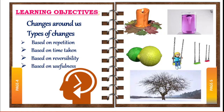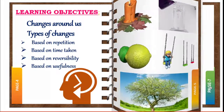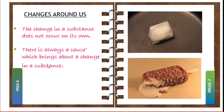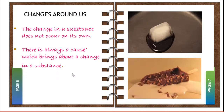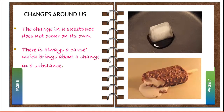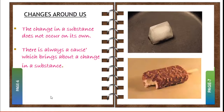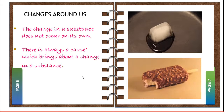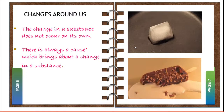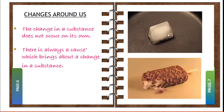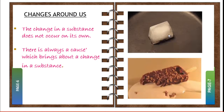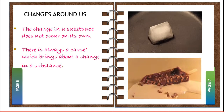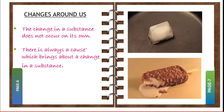These changes in a substance do not occur on their own. There is always a cause which brings about a change in a substance. For example, ice does not melt on its own to form water — it must be given some heat to melt and change into water. If we keep the ice in the freezer it remains in solid state; if we take it out it turns into liquid state.